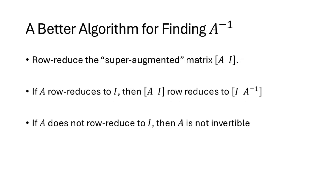Here's a better way. We start with what I call a super-augmented matrix: take matrix A and augment it with an entire other matrix — namely the identity matrix I — giving a double-wide matrix. When we row reduce that matrix, if A row reduces to I, we get I in the left half and A inverse in the right half. If A doesn't row reduce to I, then A is not invertible.